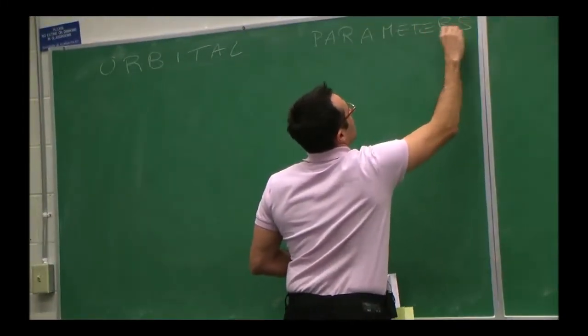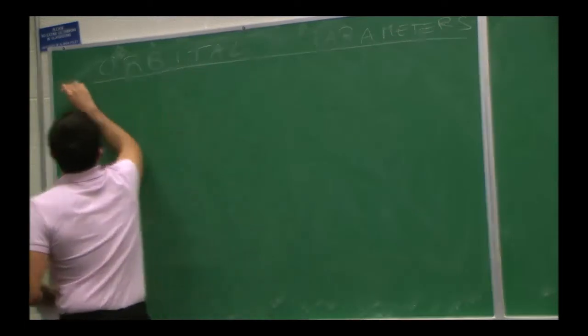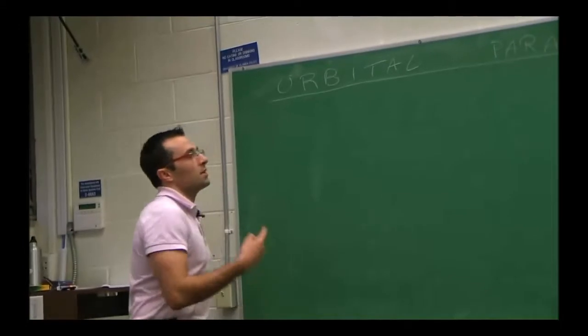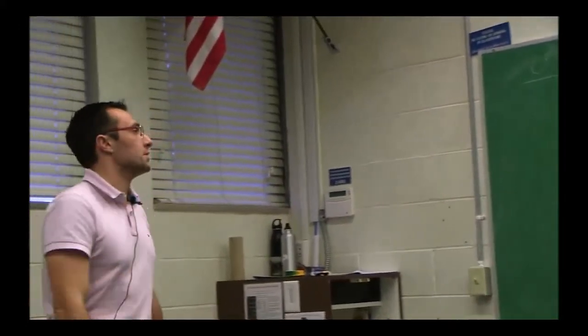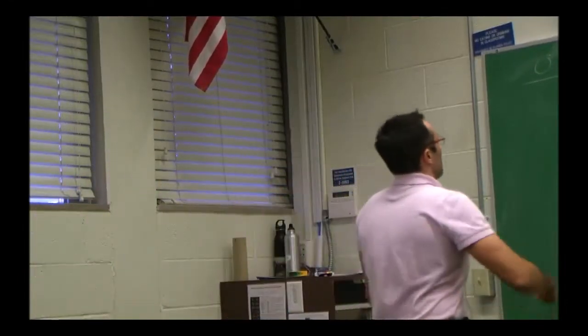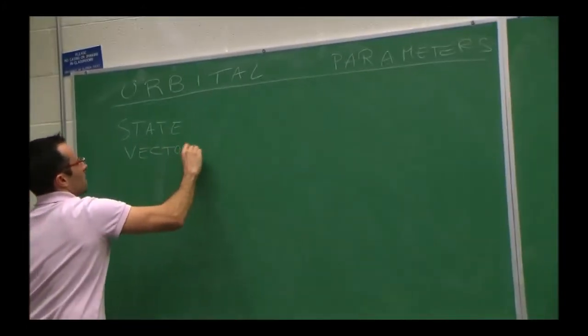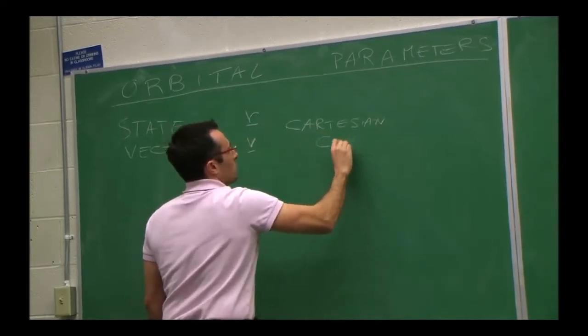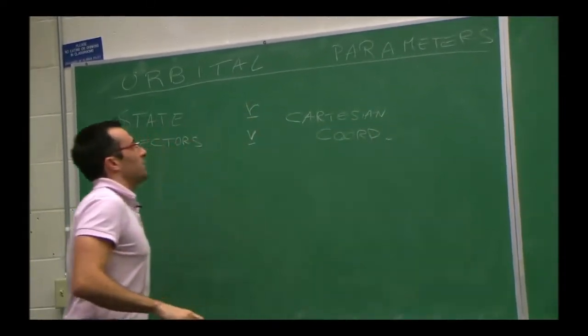We start seeing orbital parameters, or orbital elements. What I was mentioning here is that we stopped last time talking about the state vector, which is the position and velocity of a satellite in Cartesian coordinates — the vector r and vector v, which is xi plus yj plus zk and their time derivatives. Since we need six quantities to represent position and velocity, if you want to switch to any other types of coordinates like orbital parameters, we still need six.